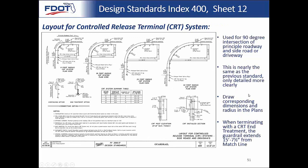The next sheet shows different types of radii for guardrail. You would select one of these, which are used for 90-degree intersections of the principal roadway and the side street or driveway. Here you can see the principal roadway labeled at top and the side street below — this can be reversed. The CRT end treatment we just discussed connects to the primary system at the match line.